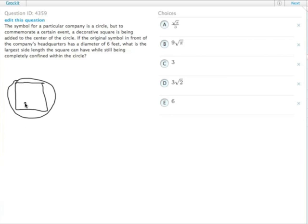And if the original symbol in front of the company's headquarters has a diameter of six feet, what's the largest length of the side of the square with it still being completely within the circle?